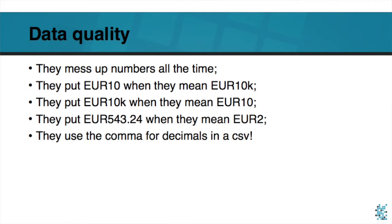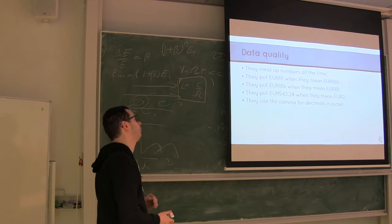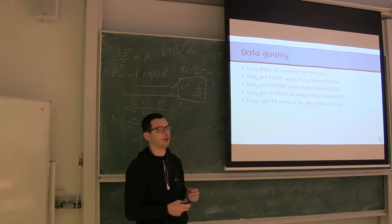They put 10,000 euros when they mean 10 euros. Unlikely, never happened to me, this one, to my bank account. It's always, they never miss a K in there. They put 543,24 when they mean 2 euros. And this happens all the time in reporting, especially. So it doesn't happen when you make a trade, luckily. But when you get a report of the trades, it happens so often that they just have the numbers wrong, flat wrong.